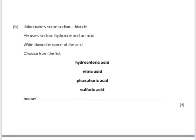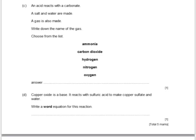Here's a past paper question. John makes some sodium chloride using sodium hydroxide and an acid. Write down the name of the acid. He's trying to make a chloride, so the acid he's going to use has to be hydrochloric acid. Next question: an acid reacts with a carbonate; a salt and water are made; a gas is also made. Write down the name of this gas. The gas made when a carbonate reacts with an acid is carbon dioxide.